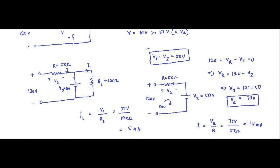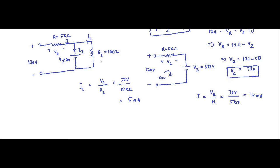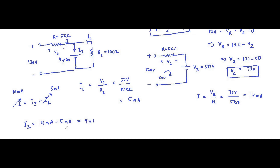Applying KCL at the node where the source current splits: the source current of 14mA divides into the zener current Iz and the load current IL. Therefore, Iz = 14mA − 5mA = 9 milliamps.